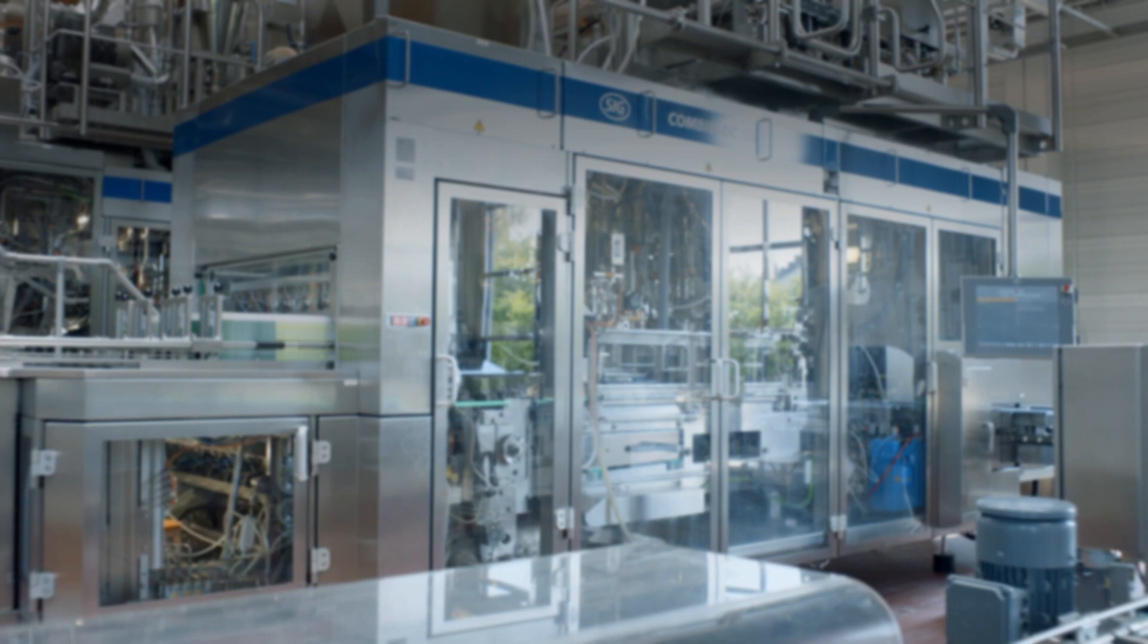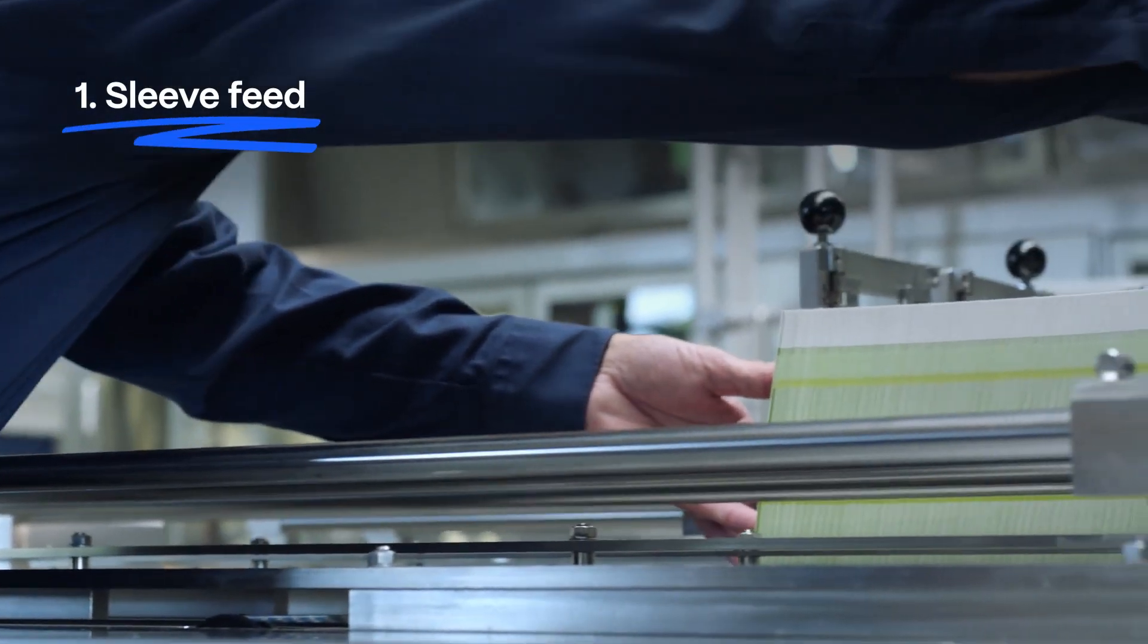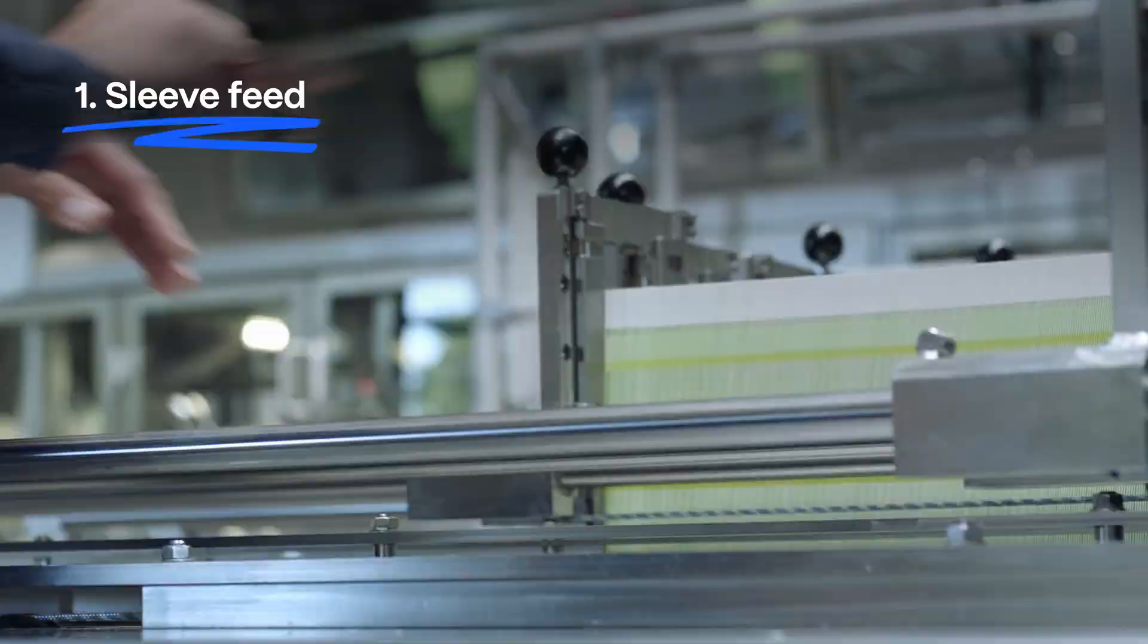How does a flat SIG sleeve become a filled carton in seconds? It all starts by feeding longitudinally sealed sleeves into the filling machine magazine.